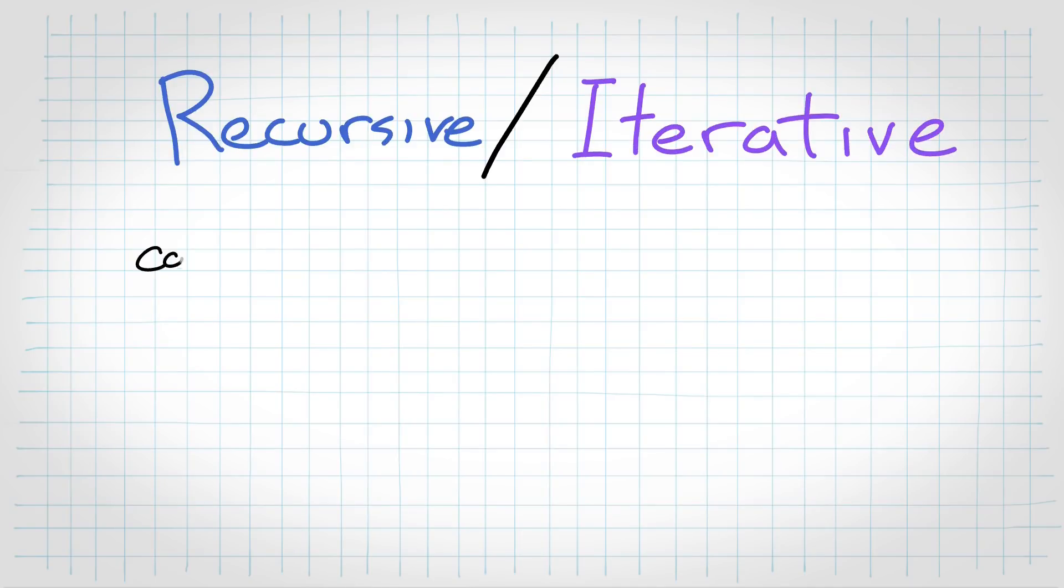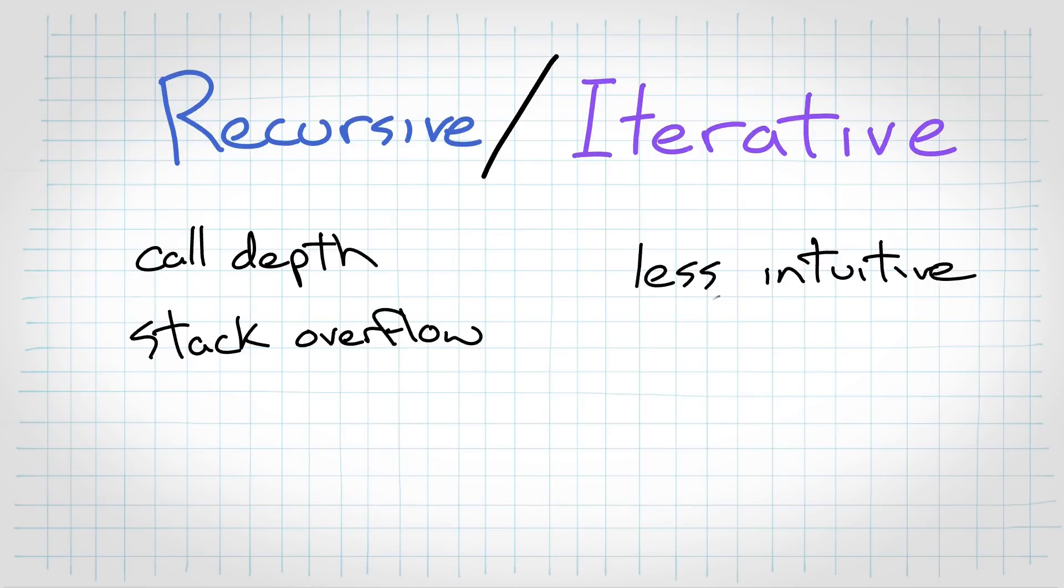Recursive solutions have their obvious downsides, like call depth and potential for stack overflows, but personally, I find it more intuitive to think this way, so I start with this approach. Iterative has its own downsides, in that you could end up computing more than is necessary to solve the problem at hand, and I find it personally less intuitive.